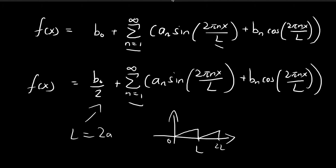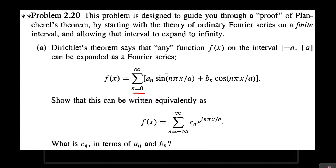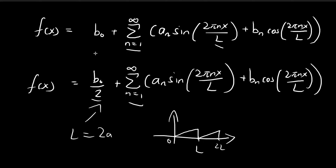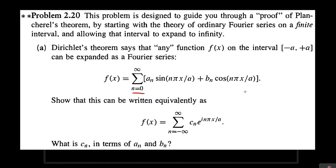If you just substitute this in, you can see that you get the exact sine and cosine expression. Whether you put the divided by 2 into the constant b0 or not doesn't really matter — this is just a matter of presentation. If you do put the divided by 2 for b0, later on there's an integral that's going to look slightly better. So these might be some expressions for Fourier series that you might have encountered before.